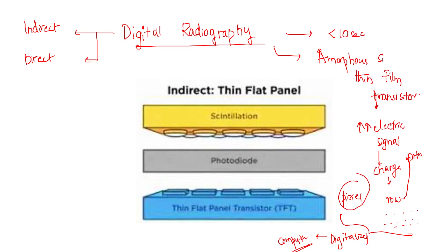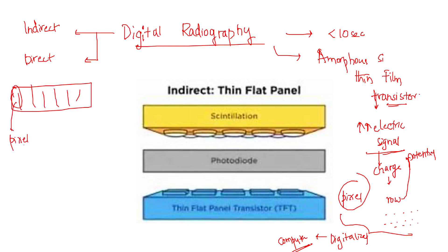The thin film transistor amplifies the electrical signal and stores it as an electric charge, which is released when high potential is applied. In the thin film transistor arrays, each transistor corresponds to one pixel of the image. Each row is connected to the activating potential and each column is connected to a charge measuring device. When all of this is fed into a computer, the computer generates the actual image.